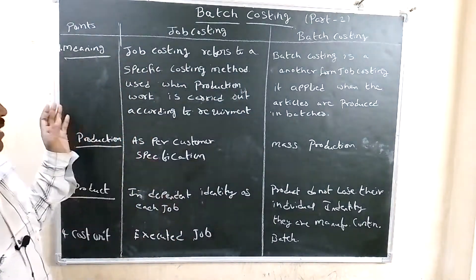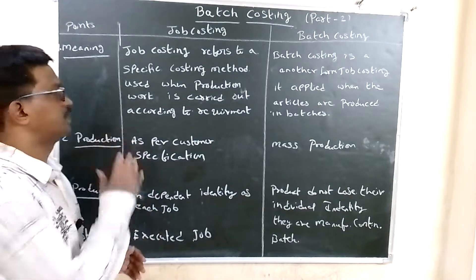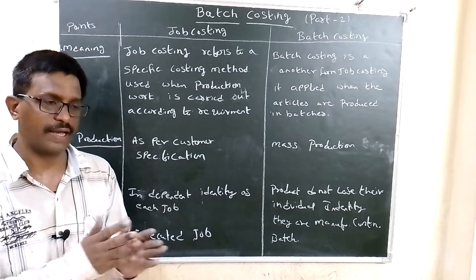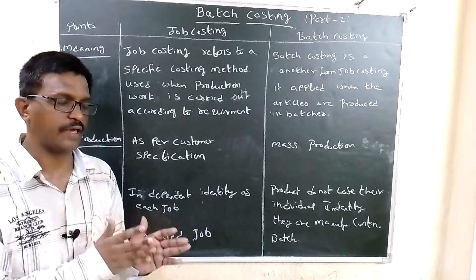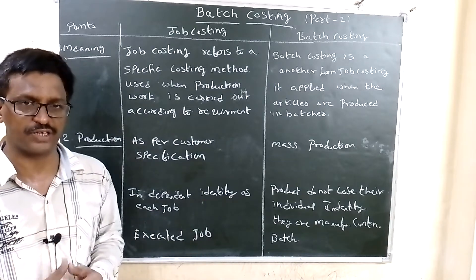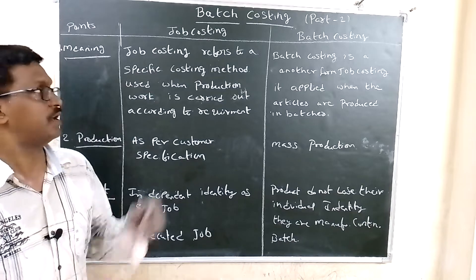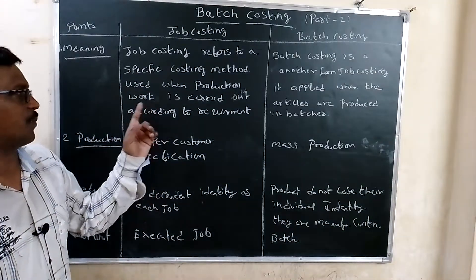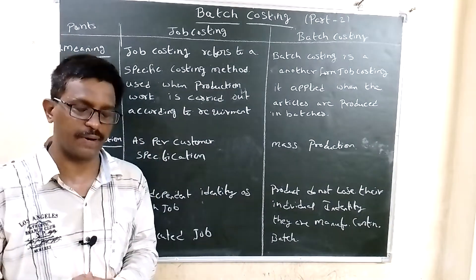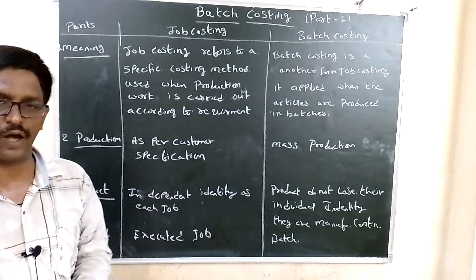The first point is meaning. Job costing mainly refers to a specific costing method where products are manufactured for a specific purpose, such as ship manufacturing, equipment manufacturing, or specific product manufacturing. Job costing is used when production work is carried out according to customer requirements.